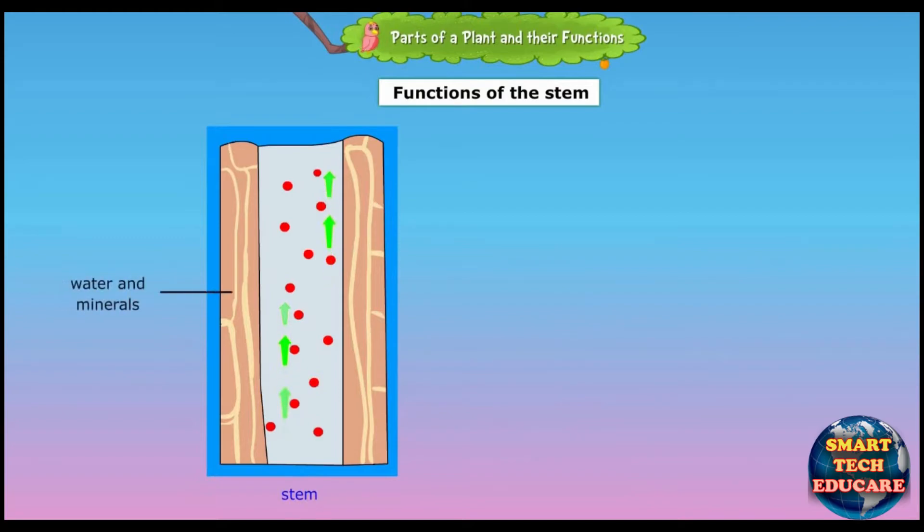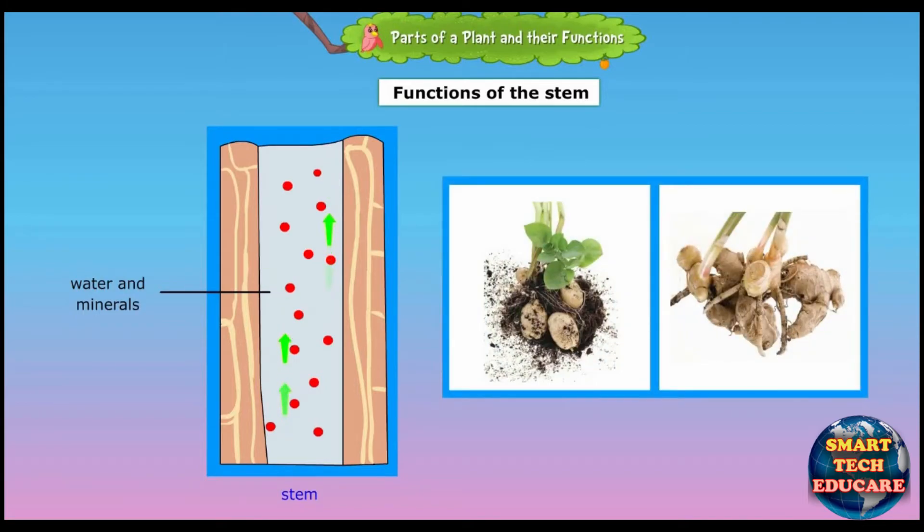The stem carries water and mineral salts from the roots to the rest of the plant. At the same time, it carries food made by the leaves to the rest of the plant. Sometimes extra food is stored in the stem. Potato and ginger are examples of plants that store food in the stem.